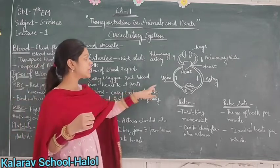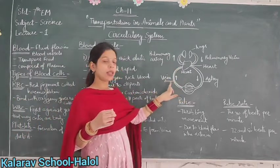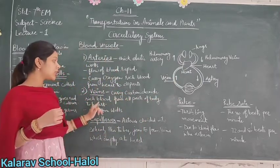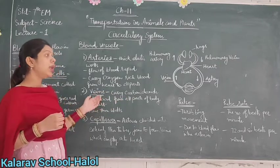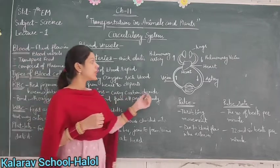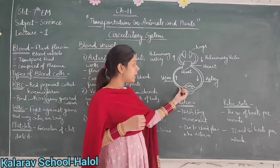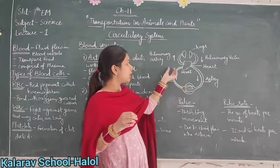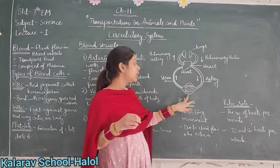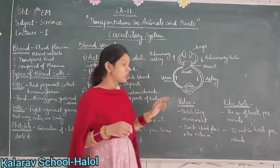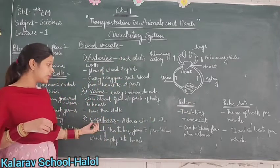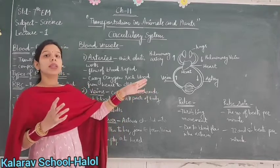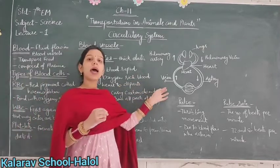Veins carry carbon dioxide-rich blood from all parts of the body back to the heart. A point to note is that arteries have thick walls, but veins have thin walls, because there is less pressure due to less flow of blood in veins.